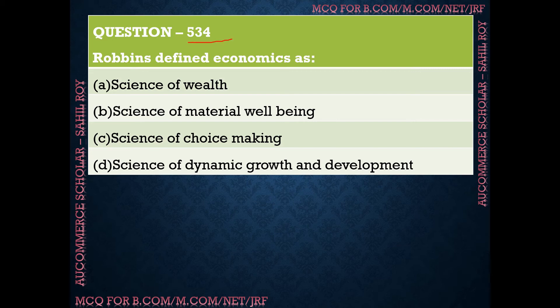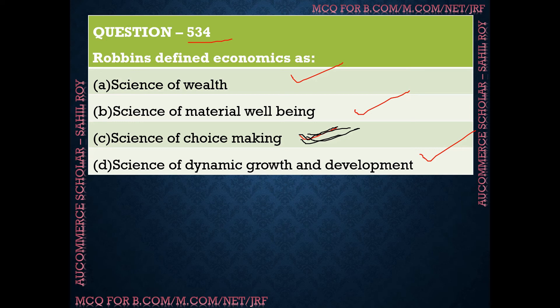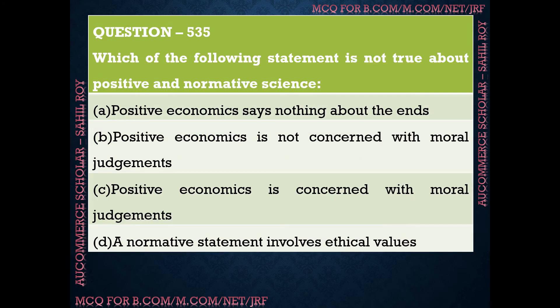Question number 534: Robbins defined economics as — options are: science of wealth, science of material well-being, science of choice making, or science of dynamic growth and development. The correct answer is option C — Robbins defined economics as the science of choice making.